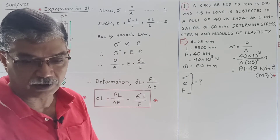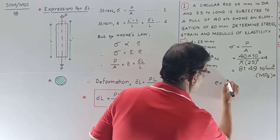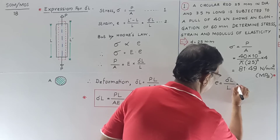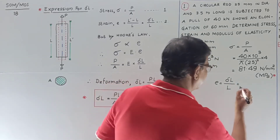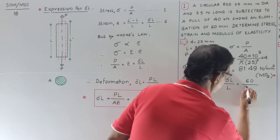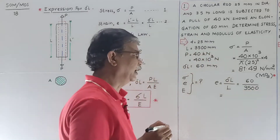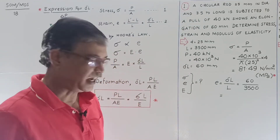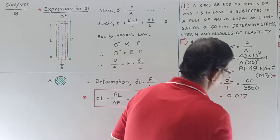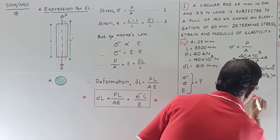Now the second thing to calculate is strain. Strain is equal to change in length, that is deformation upon original length L. Change in length is given as 60 mm divided by original length, which is 3.5 meter — but as this is in mm, L must also be in mm, that is 3500. You will find that the value of strain is 0.017. Mind well, strain is the ratio of the same type of quantity, therefore it has no unit at all.